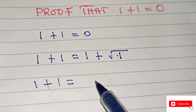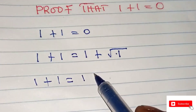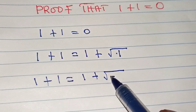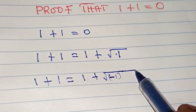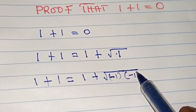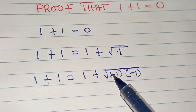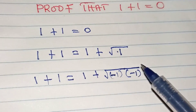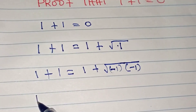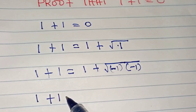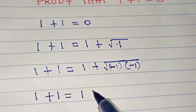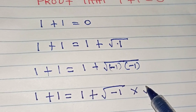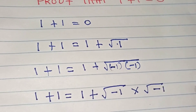Now, one plus one equals one plus the square root of negative one multiplied by negative one, because negative one times negative one is one. So one plus one equals one plus the square root of negative one multiplied by the square root of negative one.